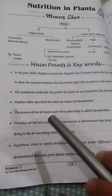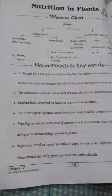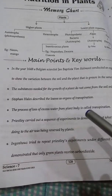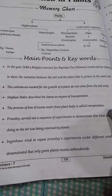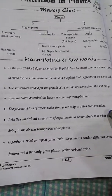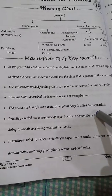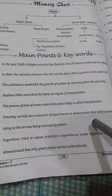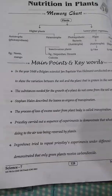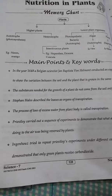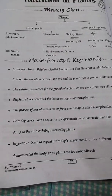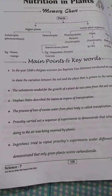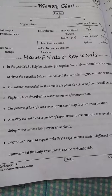Because the substances needed for growth of a plant do not come from the soil only — they come from resources like carbon dioxide present in air and in the presence of sunlight. Stephen Hales described that leaves are the organs of transpiration of the plant. The process of loss of excess water from the plant body is called transpiration.